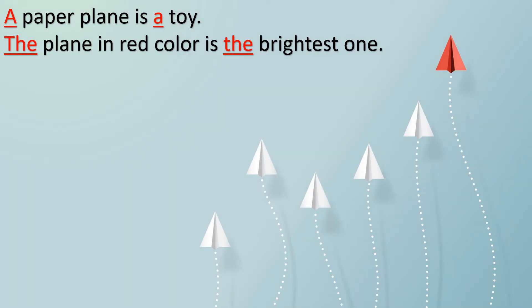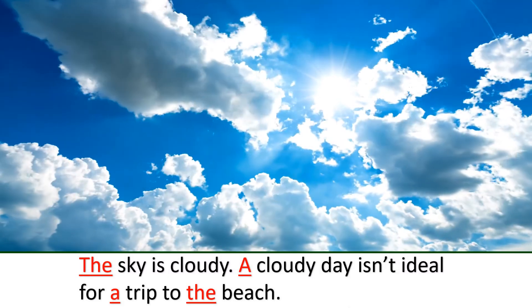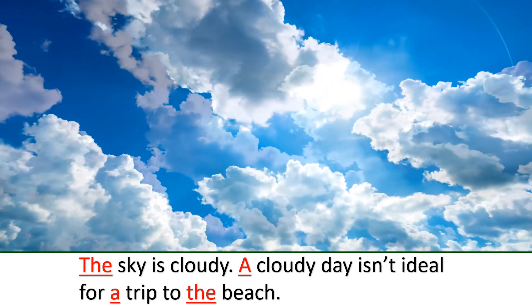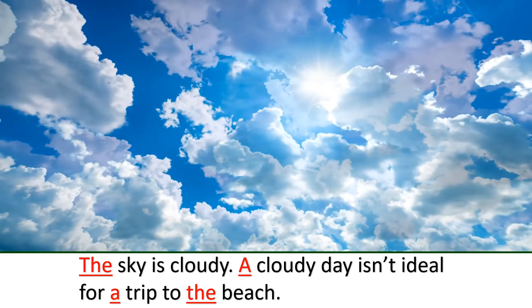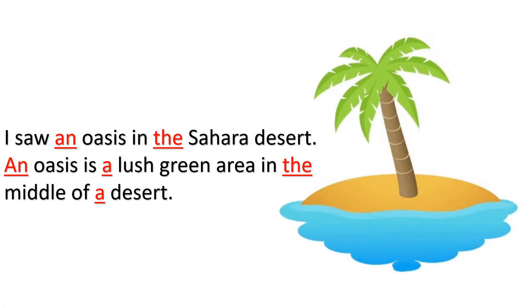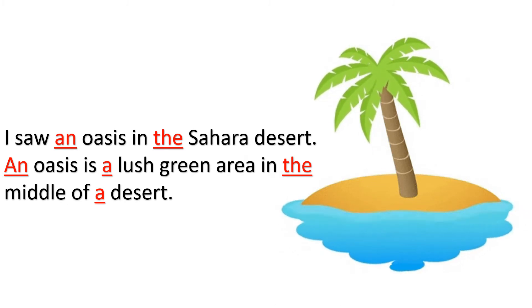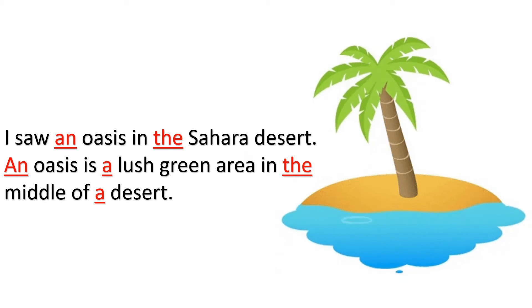'A paper plane is a toy.' 'The plane in red color is the brightest one.' 'The sky is cloudy. A cloudy day isn't ideal for a trip to the beach.' 'A big rock stands on a smaller rock.' 'I saw an oasis in the Sahara Desert.' 'An oasis is a lush green area in the middle of a desert.'